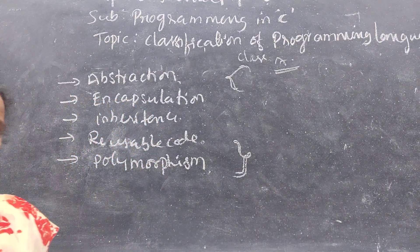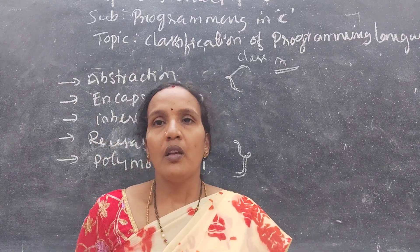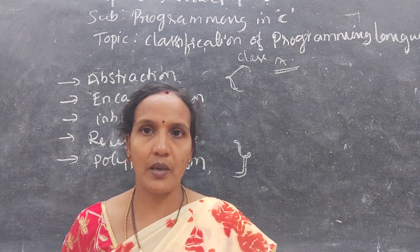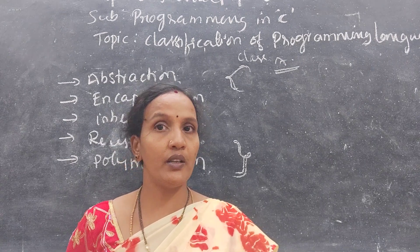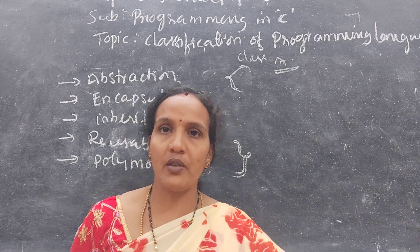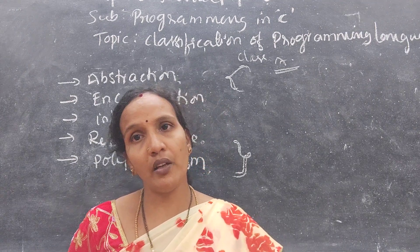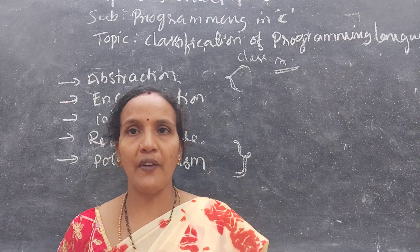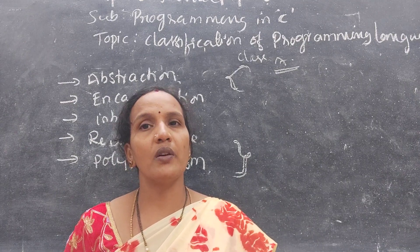The last feature is polymorphism. 'Poly' means two. For example, at home you are a child, but when you come to college you are a student — one person playing two roles. Similarly, at home the teacher is a parent, but at college they are a lecturer. When applied to programming, if one function is playing two roles, that is called polymorphism.